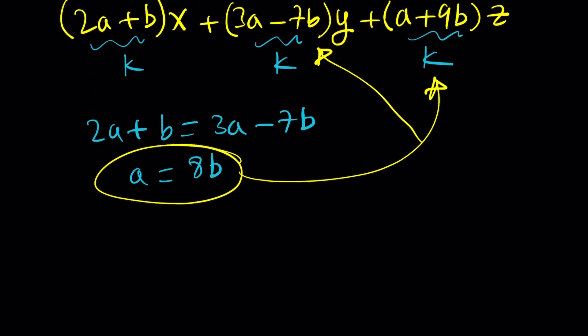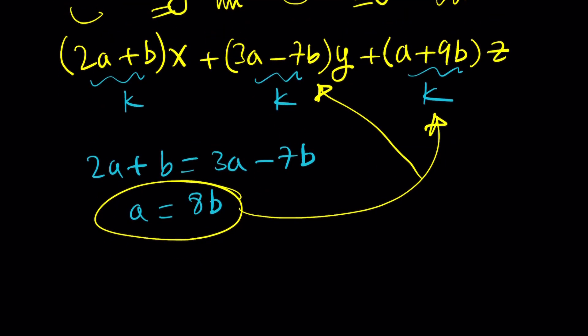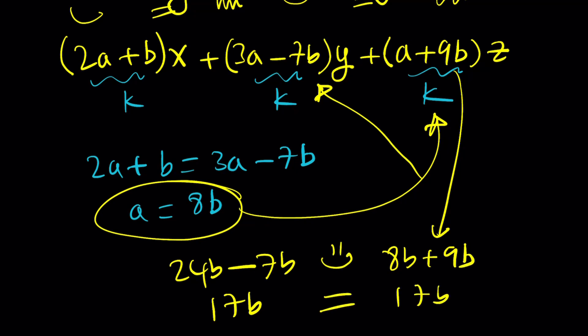Let's go ahead and find out. Replace a with 8b in the second and third, which are all equal to k. 3a is going to be 24b minus 7b. This is going to give me 17b. And here I'm getting 8b plus 9b, which is also 17b. Yay! These are equal. So good news. This works.